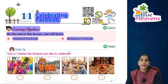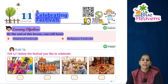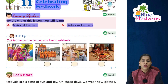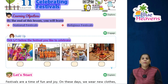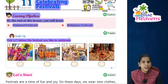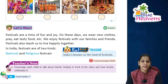In this chapter we will learn what national festivals and religious festivals are — which festivals are national and which are religious. Before starting the chapter we will do a small activity: tick the festival you like to celebrate. In this activity, pictures of different festivals are shown and you have to put a tick on the festival you like best.